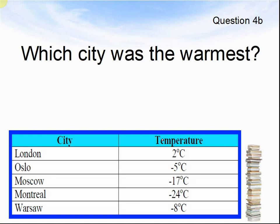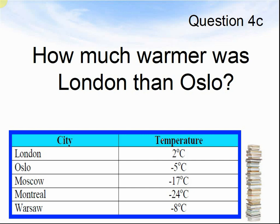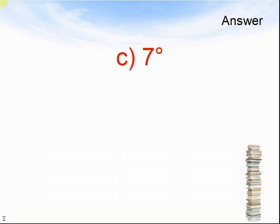Which city was the warmest? Pause the video until you are ready to see the answer. The answer is London. How much warmer was London than Oslo? Pause the video until you are ready to see the answer. The answer was 7 degrees.